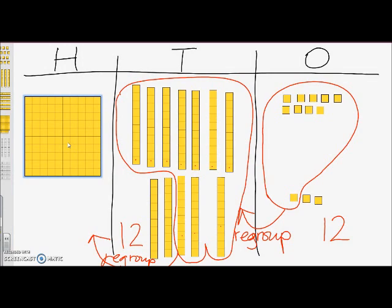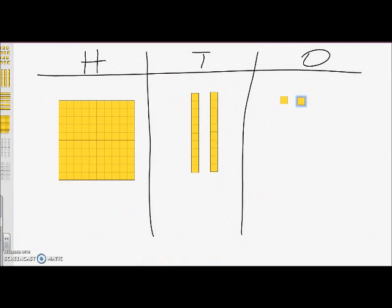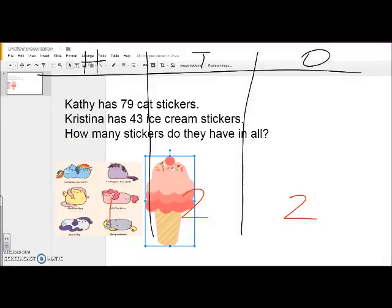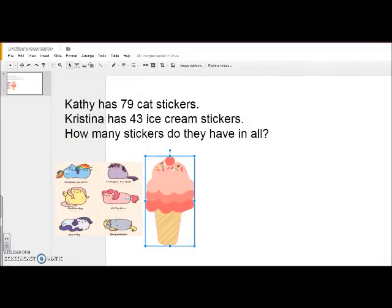Finally, we can count what we have in each column: one hundred, two tens, and two ones. We can say that Kathy and Christina have 122 stickers all together.